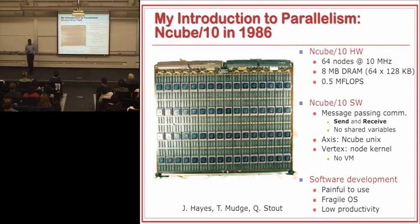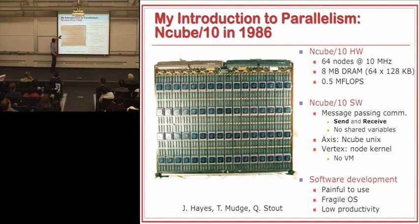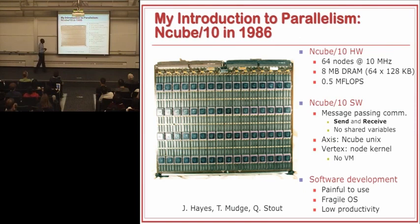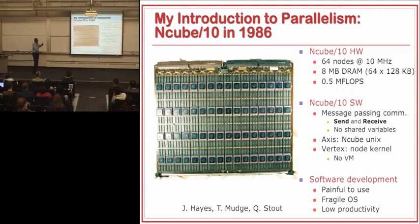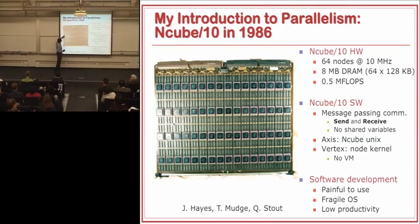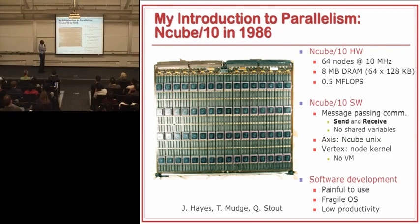Let me start at the beginning. This is a picture of the NQ10. When ACAL was getting started back in the mid-80s, we got a machine designed by some people who left Intel. This board has 64 processors or nodes; each node has 128 kilobytes of memory, giving 8 megabytes total on the whole board. Performance was about half a mega flop. This board is completely dwarfed by the iPhone that you have in your pocket today.